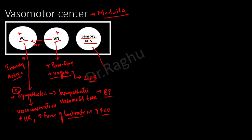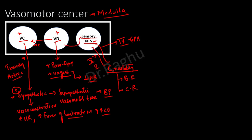The third area is the sensory area located in the nucleus tractus solitarius. This area receives information from the circulatory system via two cranial nerves: the ninth cranial nerve (glossopharyngeal nerve) and the tenth cranial nerve (vagus nerve). The input comes from two important receptors — baroreceptors and chemoreceptors. Depending on this input, the nucleus tractus solitarius modulates activity of both the vasodilator and vasoconstrictor areas.